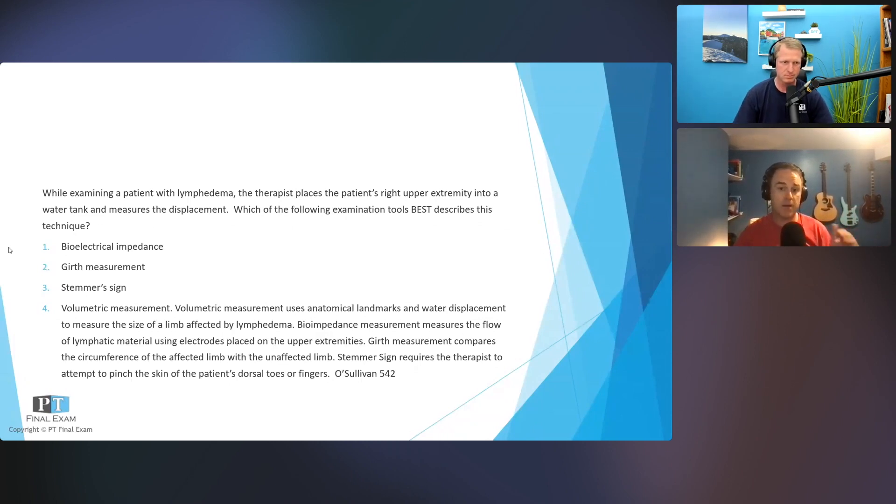Volumetric measurement uses anatomical landmarks and water displacement to measure the size of the limb affected by lymphedema. The other options: bioimpedance measurement is going to measure the flow of lymphatic material using electrodes that would get placed on various parts of your upper extremity. Girth measurement is going to compare the circumference around the limb that you're measuring. And Stemmer sign is going to require the therapist to attempt to pinch the skin of the patient's dorsal toes or fingers, and you're trying to see what you can get.